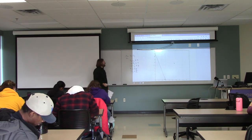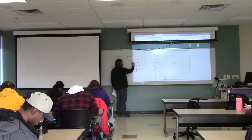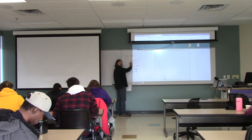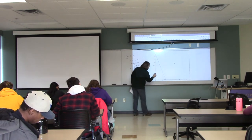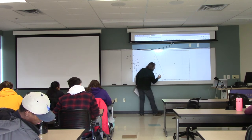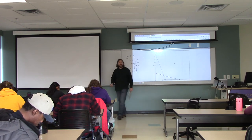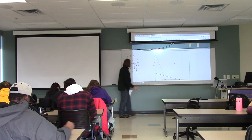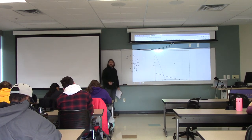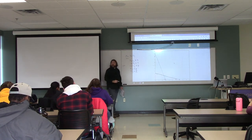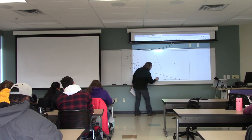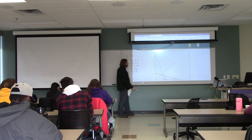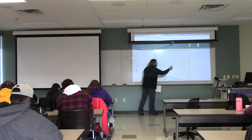For x plus 3y ≤ 7: if y is 0 then x is 7, and if x is 0 then y is 7/3, or about 2 and a third. We're also below that line. Finally, negative x plus y ≥ 0 is the same as y ≥ x, so that's this line, and we are above that line.